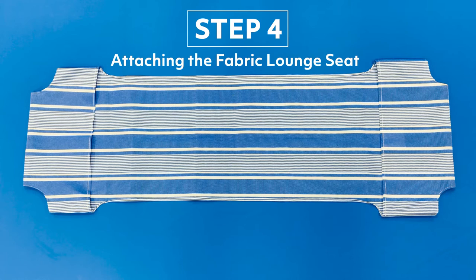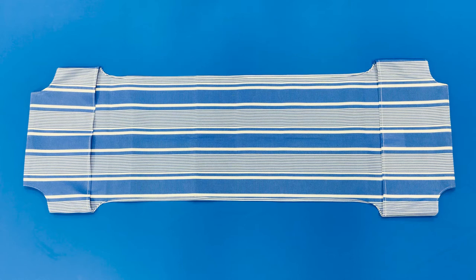Step four, attaching the fabric lounge seat. Take the fabric lounge seat and notice that both ends have pockets labeled head and foot. Note that the foot pocket seam measures seven inches and the head pocket seam measures five inches.